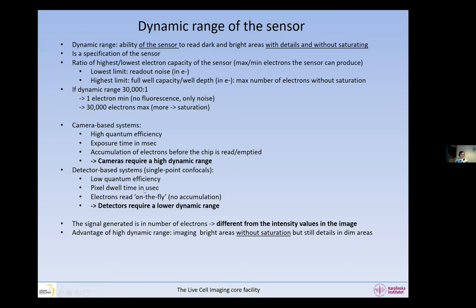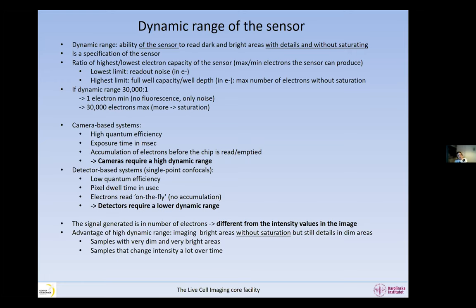The advantage of a sensor with a high dynamic range is that you can image bright areas without saturating while still getting detail in dim areas. Samples that require a high dynamic range are those with very dim and very bright areas, or samples that change intensity a lot over time — for example, tracking protein expression over time. The disadvantage is that imaging is slower.